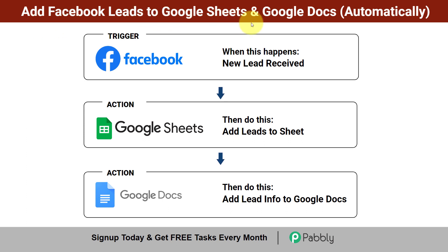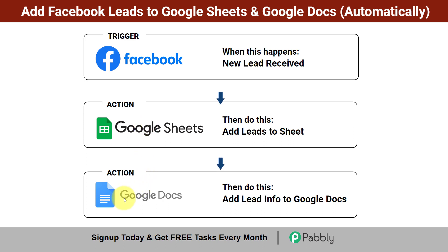How to add Facebook leads to Google Sheets and Google Docs automatically. Assume that you are running ads on Facebook for which you have created a Facebook lead ad form. Whenever any new lead is received via that form, I will show you how you can add that lead to Google Sheets automatically, and at the same time how a new document will be generated and the same lead data added to Google Docs. If you want to sync your Facebook leads with both Google Sheets and Google Docs, come with me and I will show you everything step by step.